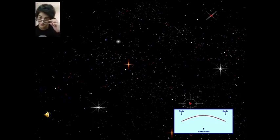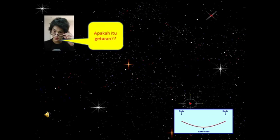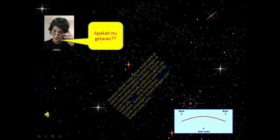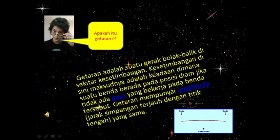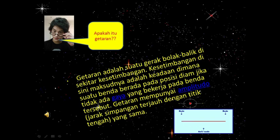Apakah itu getaran? Kalian bisa lihat yang di pojok kiri bawah itu ya anak-anak. Getaran adalah gerakan bolak-balik di sebuah kesetimbangan. Kesetimbangan di sini adalah keadaan di mana suatu benda berada pada posisi diam jika tidak ada gaya yang bekerja pada benda tersebut. Getaran mempunyai amplitudo atau jarak simpangan terjauh dengan titik tengah yang sama.